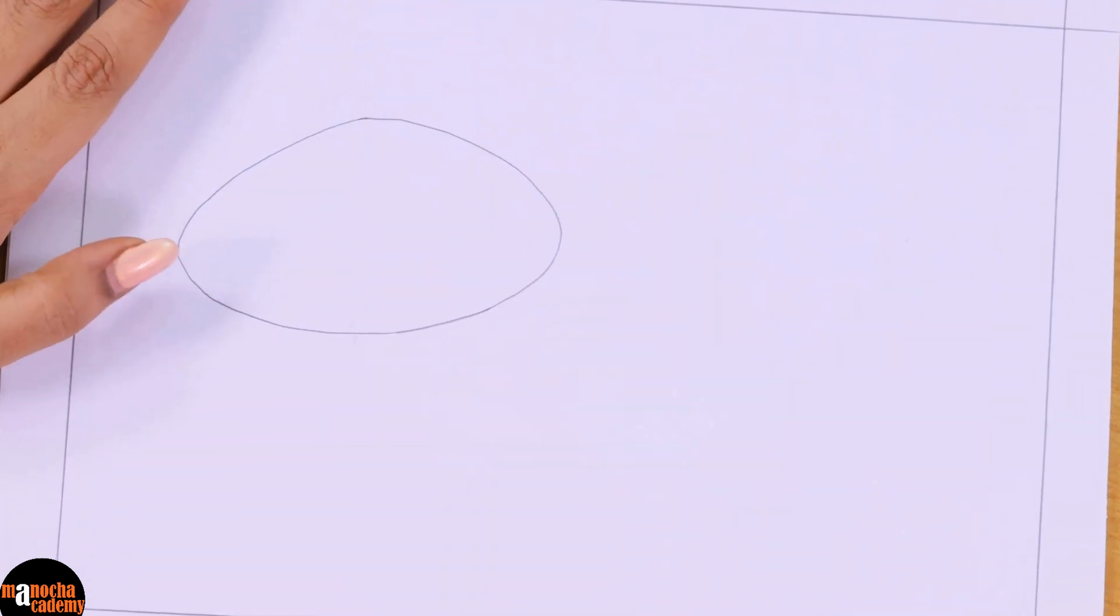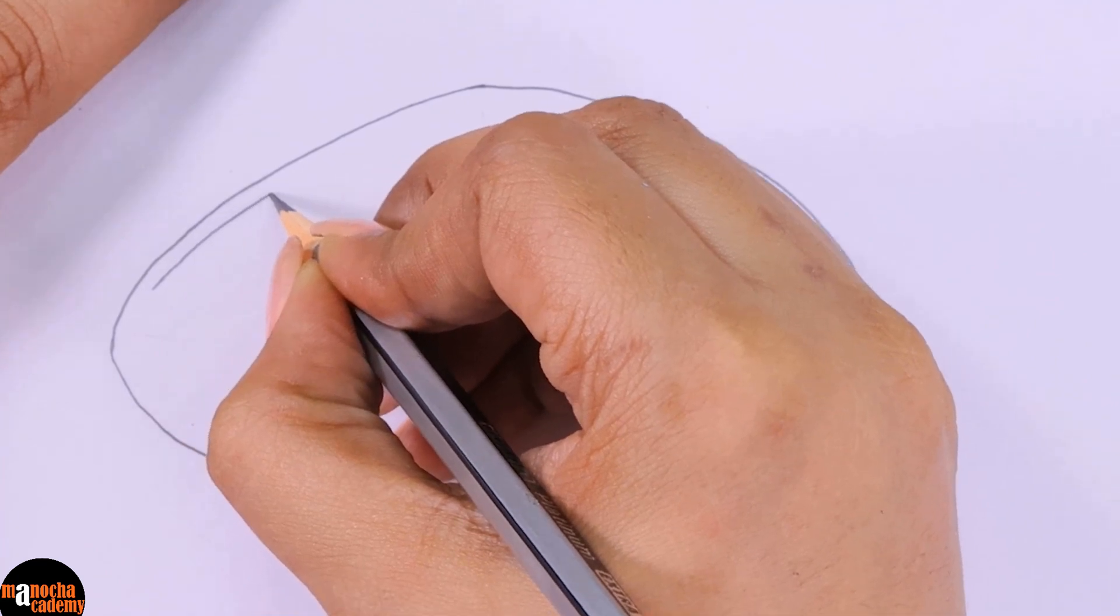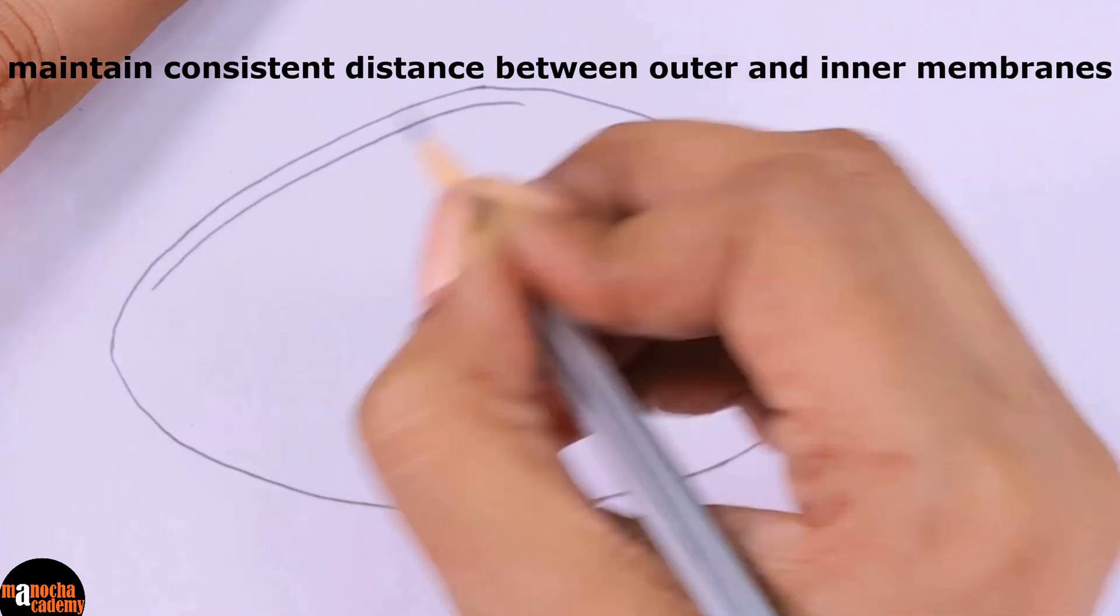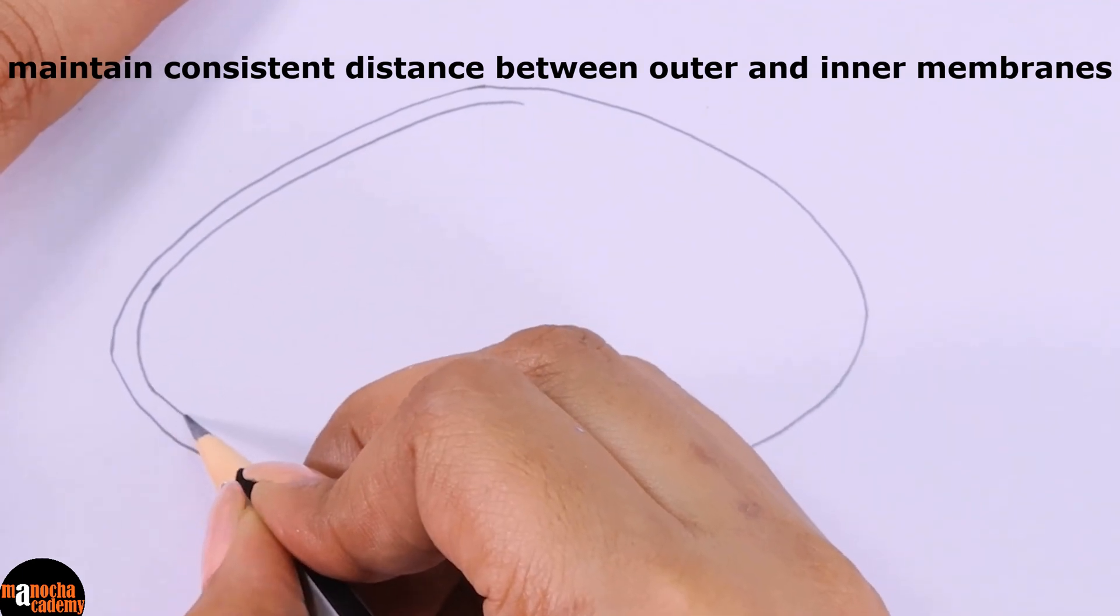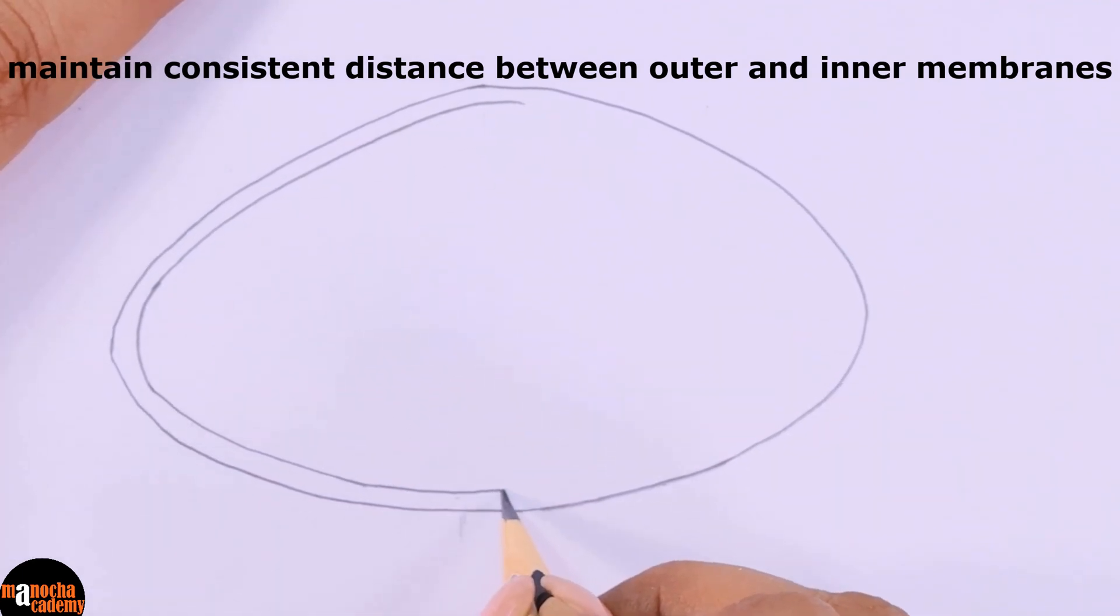Now since this is a double membrane bound structure I will draw another membrane. Make sure the distance between the two membranes remains the same all throughout. The distance should not decrease and increase in different points.